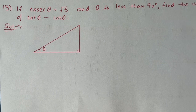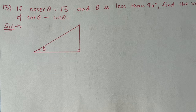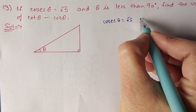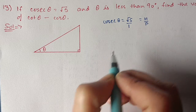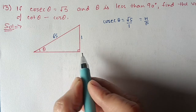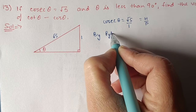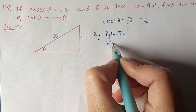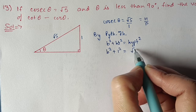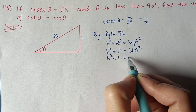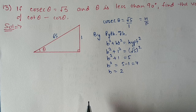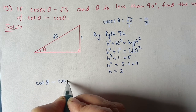Question 13: if cosec θ equals root 5 and θ is less than 90 degrees, find the value of cot θ minus cos θ. cosec θ is given as root 5. Since cosec θ is hypotenuse by perpendicular, we take hypotenuse as root 5 and perpendicular as 1. By Pythagoras theorem: base square plus height square equals hypotenuse square — height is 1 and hypotenuse is root 5. So base square plus 1 equals 5, giving base square equals 4, meaning base equals 2.